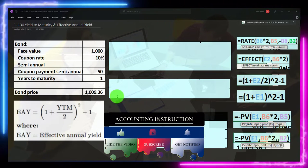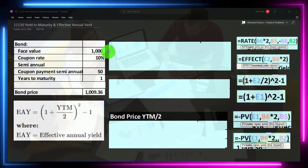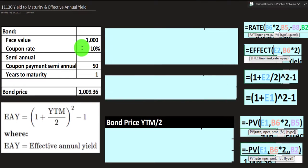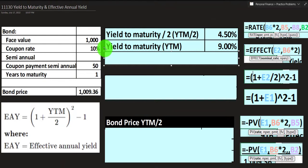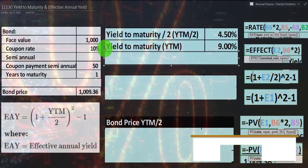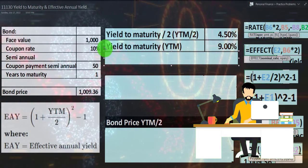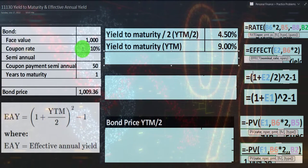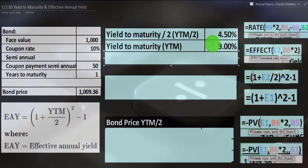We'll say the price of the bond is $1,009.36 — higher than the face value, meaning the bond is at a premium. The yield to maturity is kind of like the market rate; we often want to present it on an annual basis. But because payments happen every six months from a present value standpoint, we usually calculate the rate on a six-month time period, then multiply by two to get the yield to maturity.